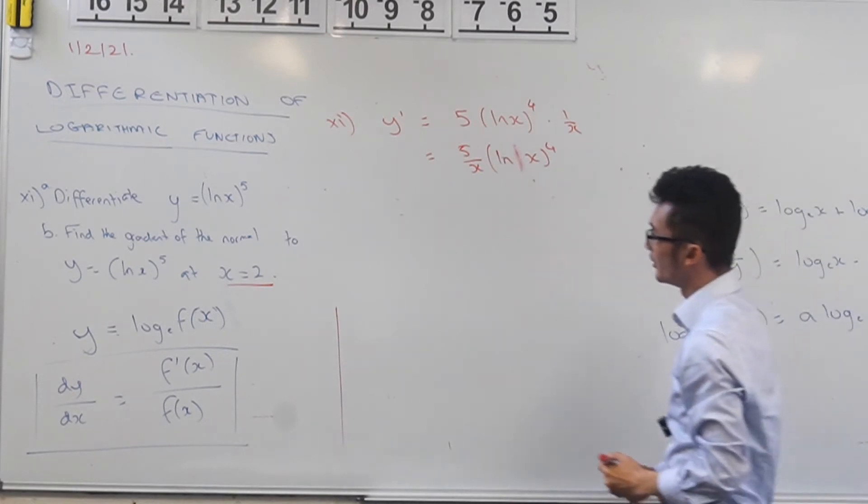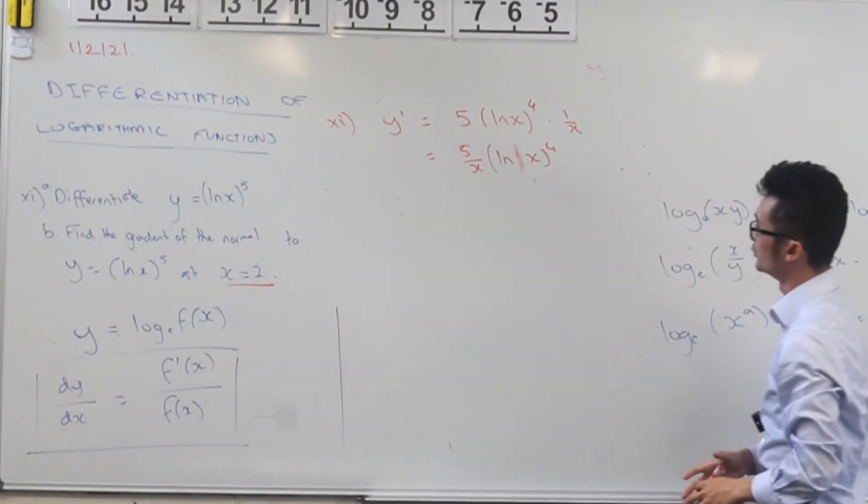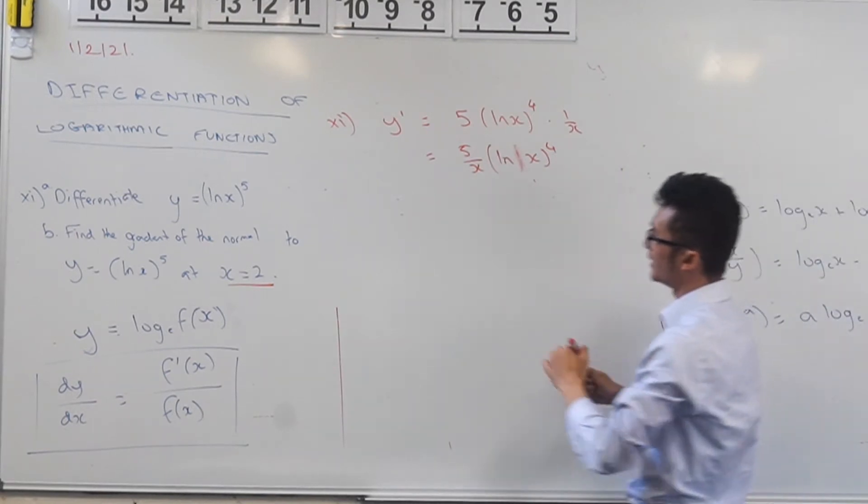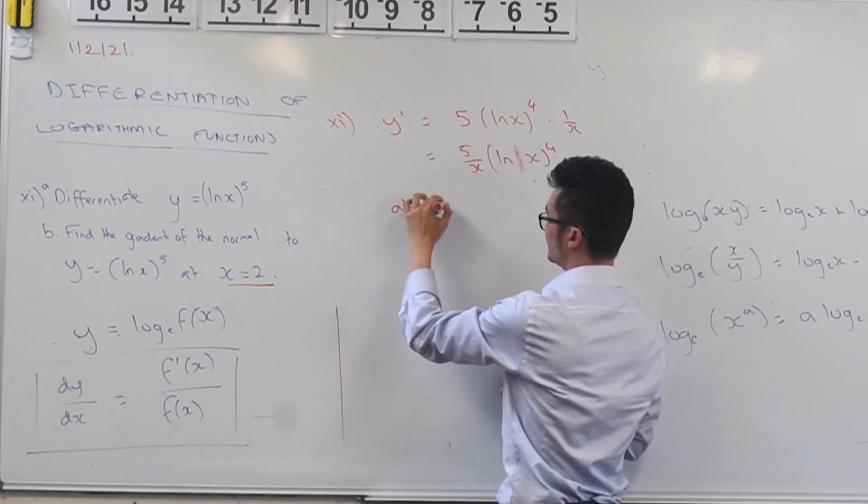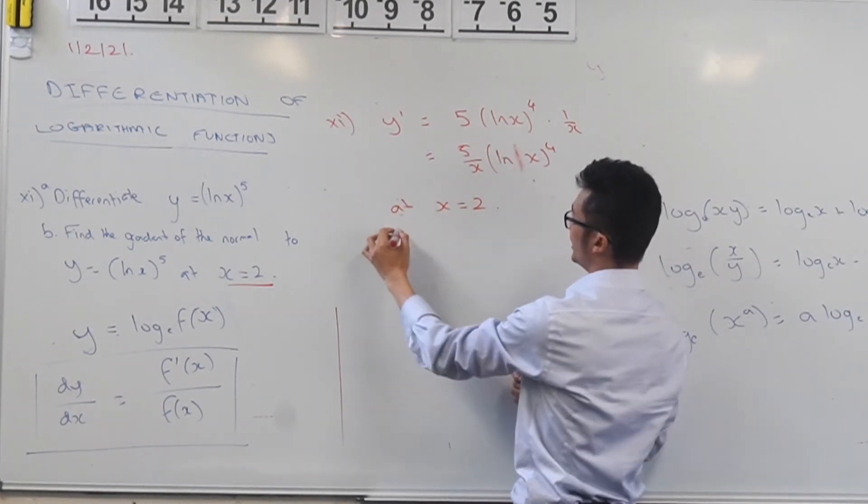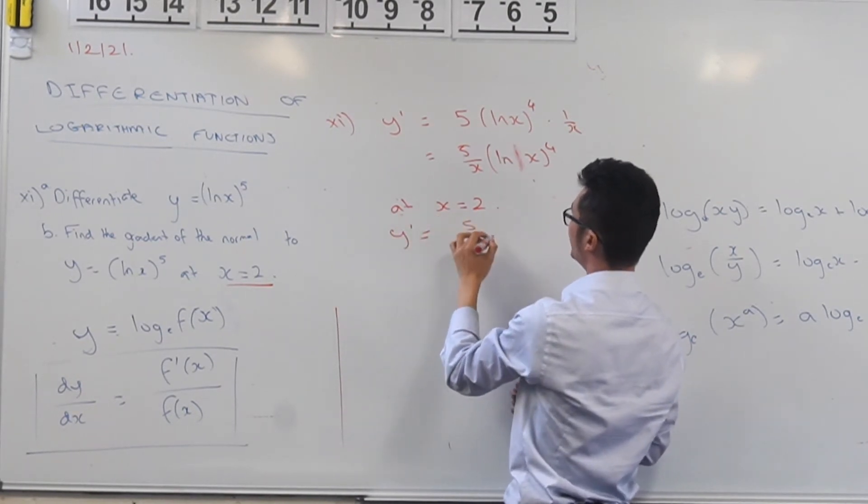And then I want to find the gradient of the normal at x equals 2. So what I need to do then is I need to say, okay, at x equals 2, now if I substitute x equals 2, I'm going to find the gradient of the tangent.